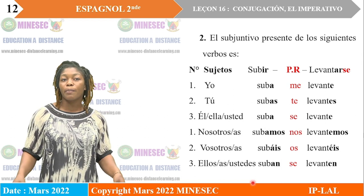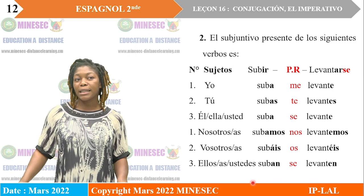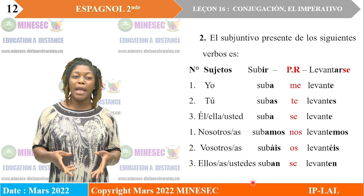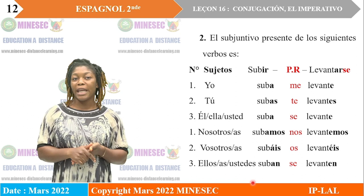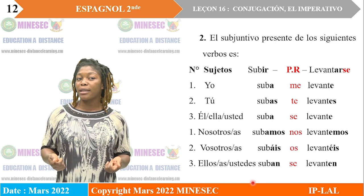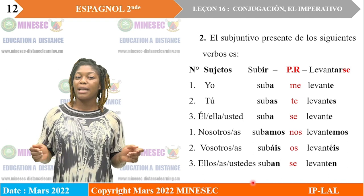Vamos a continuar con el presente de subjuntivo de dichos verbos. Con el verbo subir: yo suba, tú subas, él, ella, usted suba, nosotros, nosotras subamos, vosotros o vosotras subáis, ellos, ellas, ustedes suban. Y el verbo levantarse, como verbo pronominal: yo me levanté, tú te levantes, él, ella, usted se levante, nosotros o nosotras nos levantemos, vosotros o vosotras os levantéis, ellos, ellas, ustedes se levanten.